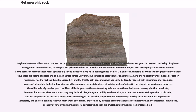In gneisses these alternating folia are sometimes thicker and less regular than in schists, but most importantly less micaceous; they may be lenticular, dying out rapidly. Gneisses also, as a rule, contain more feldspar than schists do, and are tougher and less fissile. Contortion or crumbling of the foliation is by no means uncommon. Schistosity and gneissic banding, the two main types of foliation, are formed by directed pressure at elevated temperature, and by interstitial movement or internal flow arranging the mineral particles while they are crystallizing in that directed pressure field.